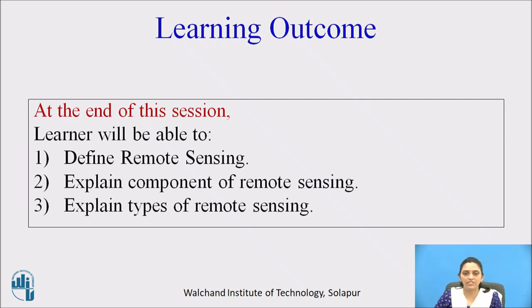Learning outcomes of this session: at the end of this session, the learner will be able to define remote sensing, explain the components of remote sensing, and explain the types of remote sensing.